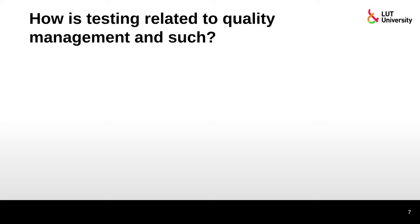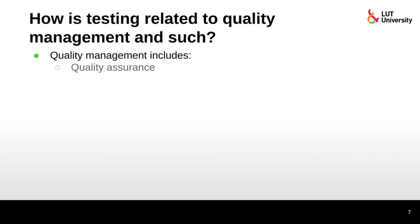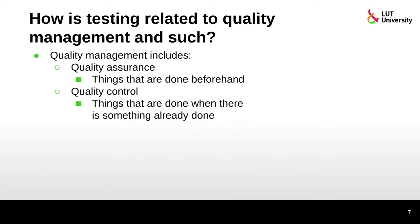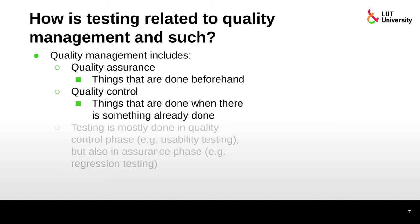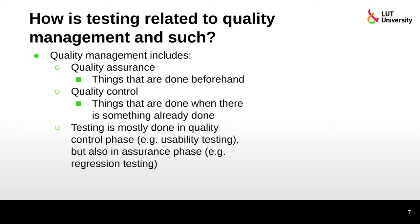How is testing related to quality management? Quality management includes quality assurance — tasks done beforehand — and quality control, which covers things done when something is already built. Most testing is done in the quality control phase, such as usability testing, but some things like regression testing can be done in the quality assurance phase.